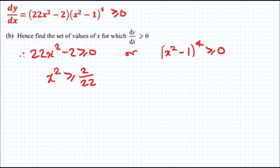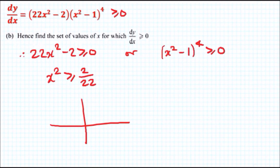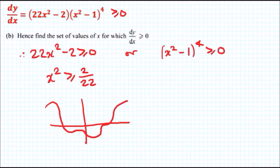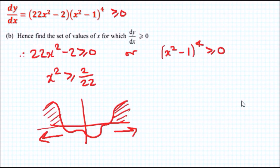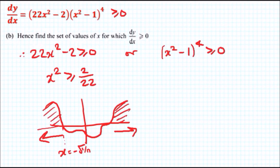For 22x² - 2 ≥ 0: we add 2 across and divide by 22, giving x² ≥ 2/22, which is 1/11. Squaring this, the function being greater than zero means the answers are on the outside of the curve. So the solutions are outside the intervals: x = -√(1/11) and x = +√(1/11).